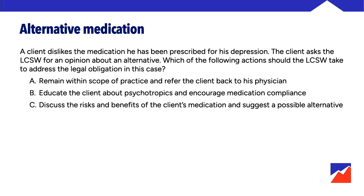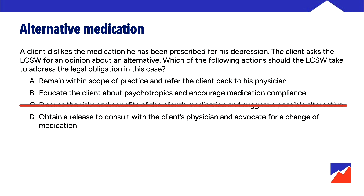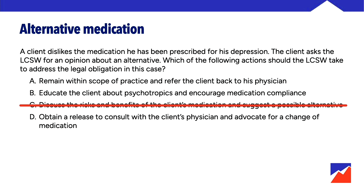Option C — discuss the risks and benefits of the client's medication and suggest a possible alternative — is clearly outside of scope, so we can knock that out right away. Option D: obtain a release to consult with the client's physician and advocate for a change of medication. Obtaining a release to consult with the physician is never a bad thing, and professional collaboration often goes well. But when we advocate for a change of medication, we are taking on the stance of a medical provider — that is not our determination to make. We can report to the physician what the client says they are experiencing on this medication, but we should not be telling the physician how to do their job.